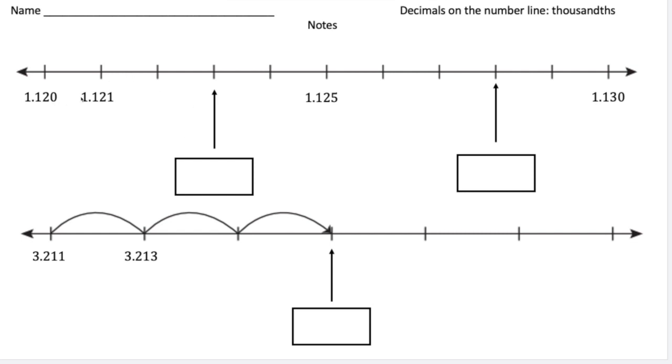So take a look at this first number line. Down at the very beginning we have the number 1 and 120 thousandths. At the far end we have 1 and 130 thousandths. So we want to know what's the value of right here and also right over here.